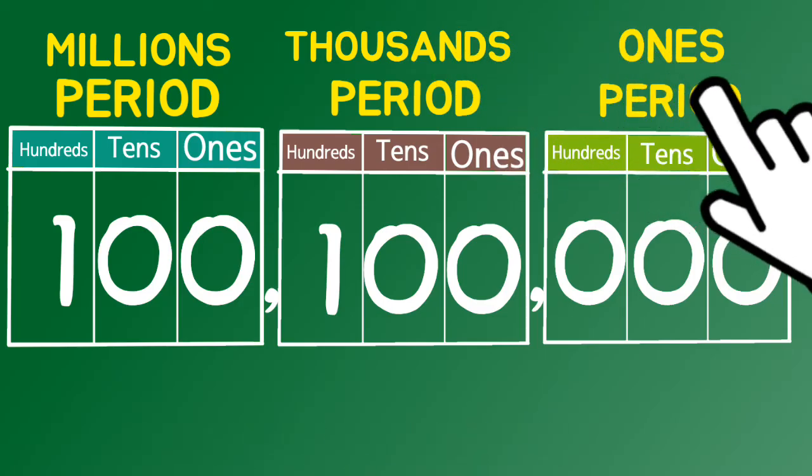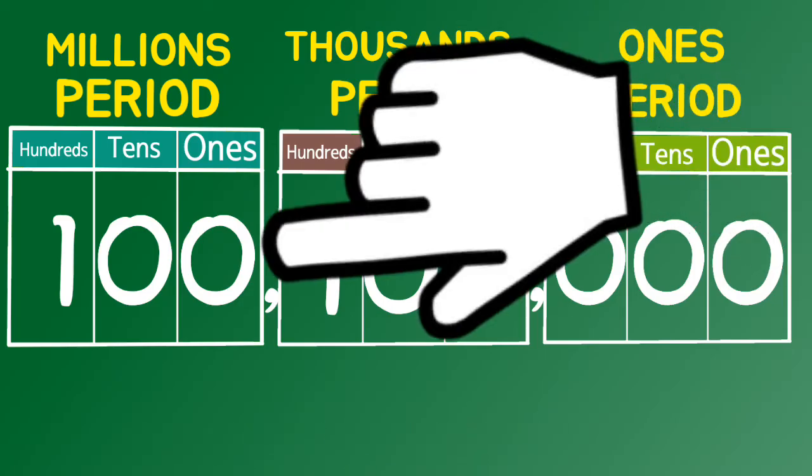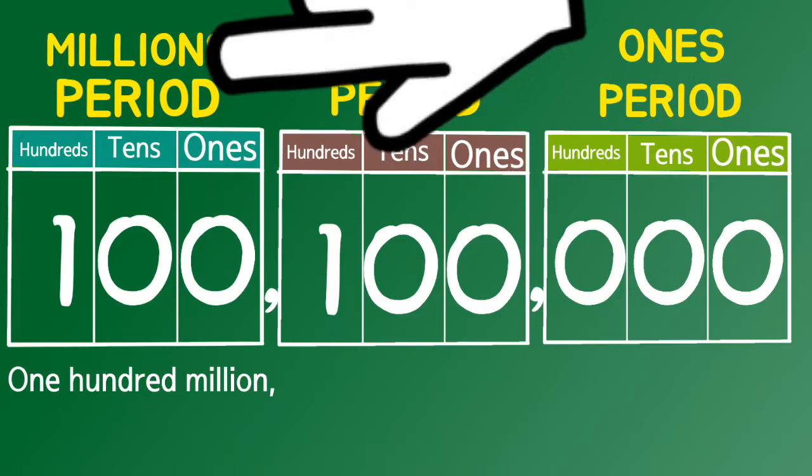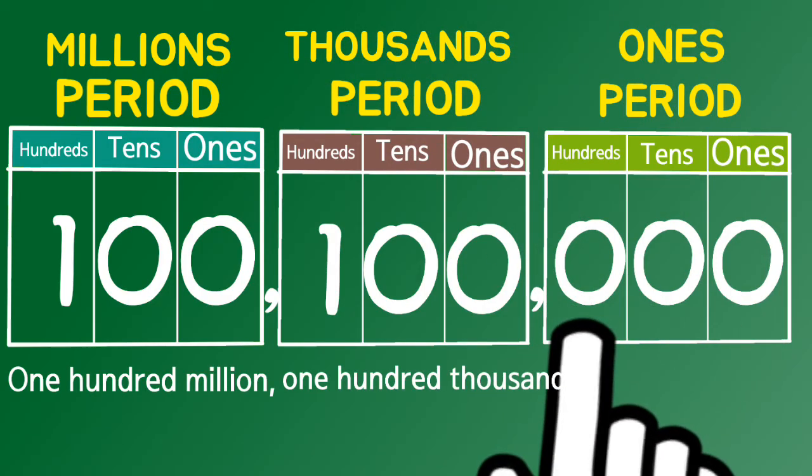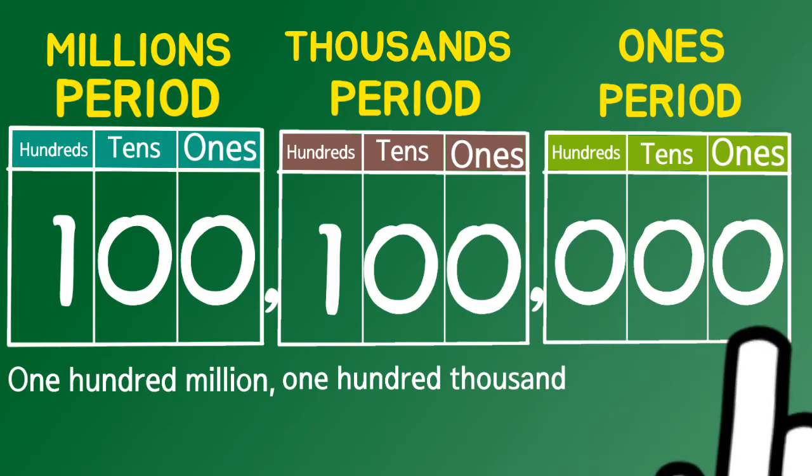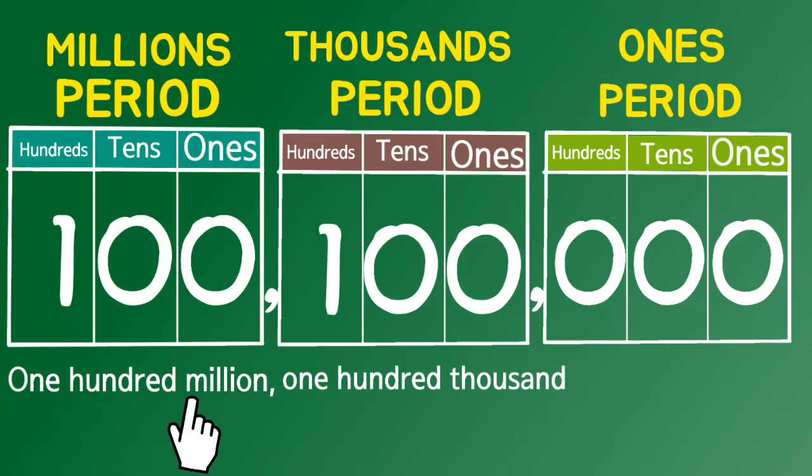No need to say the period in one's period. One hundred, million, one hundred, thousand. Those zeros in one's period has a value. We don't need to read those. One hundred million, one hundred thousand.